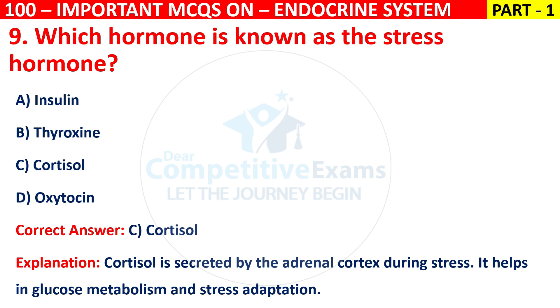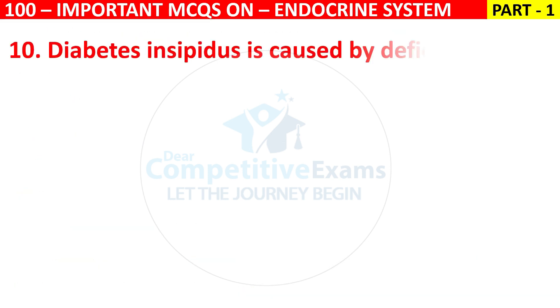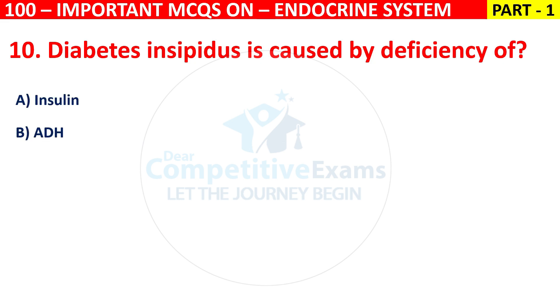Q10. Diabetes insipidus is caused by deficiency of: insulin, ADH, aldosterone, or thyroxin.